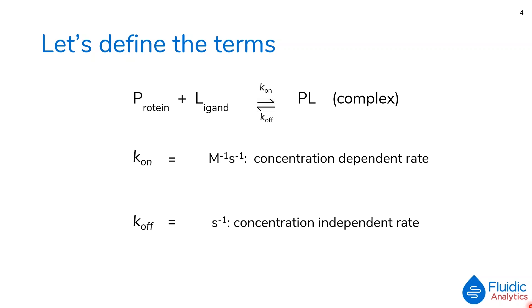On the other hand, the KOFF describes the rate of the backwards reaction, depicting the rate at which the complex dissociates into separate proteins and ligands. This rate is independent of the concentrations of the free proteins and ligands in the system, and it is measured in per seconds.